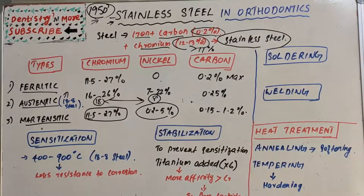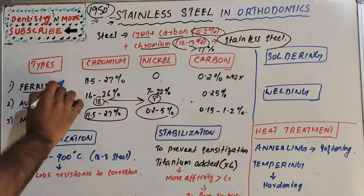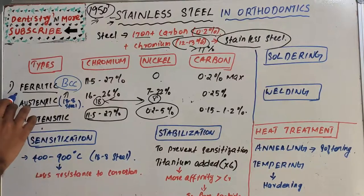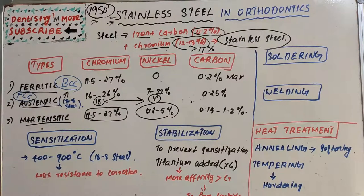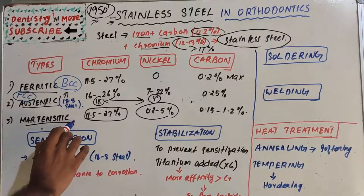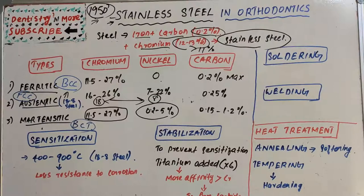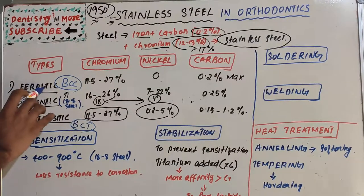In terms of crystal structure, ferritic stainless steel has a body-centered cubic (BCC) lattice, austenitic has a face-centered cubic (FCC) lattice, and martensitic has a body-centered tetragonal (BCT) arrangement. So BCC, FCC, and BCT are the structural differences between these three types.